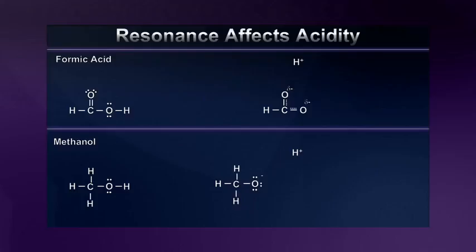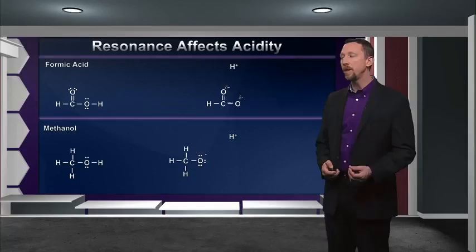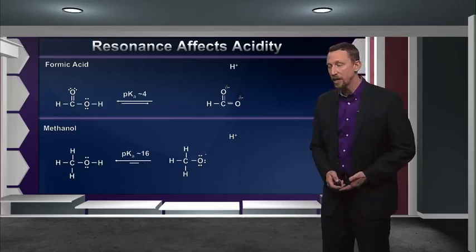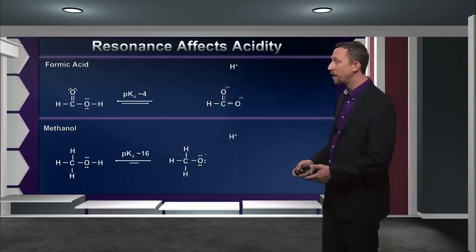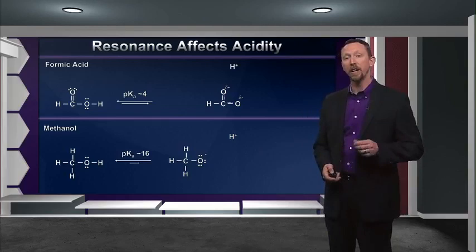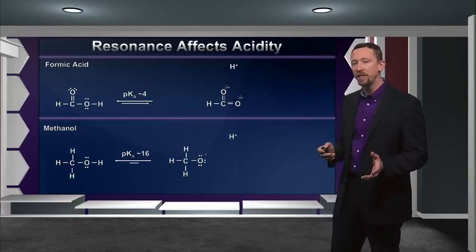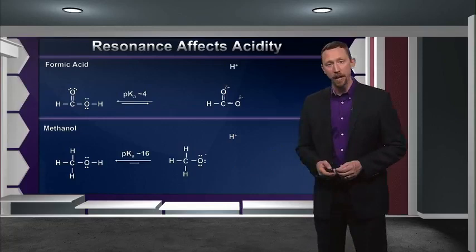When I go to the tables and look up the pKa values of these two acids so that I can compare their intrinsic acidities, what I see is that formic acid has a pKa of somewhere around 4, whereas methanol has a pKa somewhere around 16. That's 12 orders of magnitude difference in their equilibrium constants, their Ka values. So what this tells me is that the resonance stabilization of the conjugate base in formic acid has a tremendous effect on its relative acidity when compared to methanol, which has no resonance stabilization in its conjugate base. In short, this effect cannot be neglected when it's present.